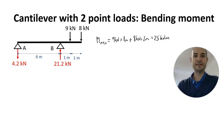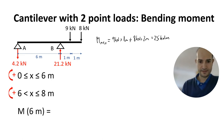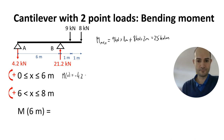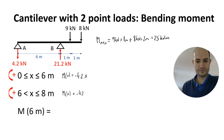Now let's calculate the moment diagram for the full length of the beam. Starting on the left-hand side, the moment equals the uplift reaction times x. Then going forward we have minus 4.2x, plus the fulcrum reaction times (x minus 6), and then minus the 9 kN point load times (x minus 7).